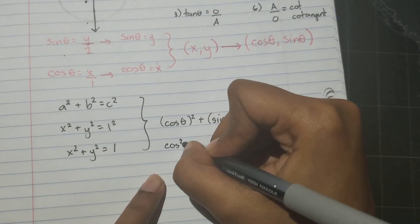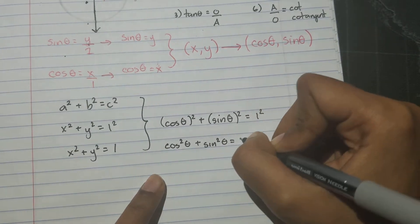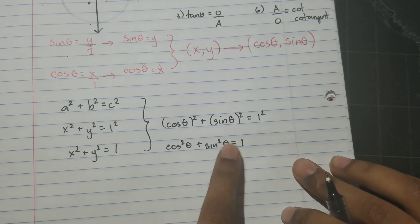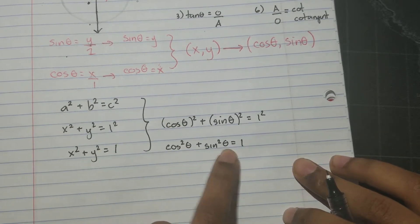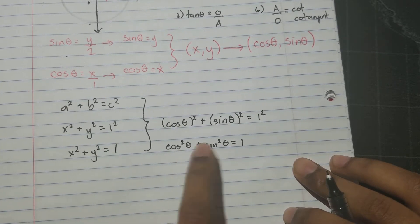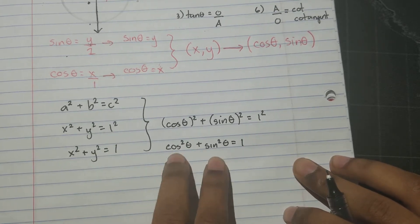Cosine squared theta plus sine squared theta equals one. So theta is written in degrees or radians. So whatever that theta is, as long as it's the same, it will always equal one. And as long as it's being squared.